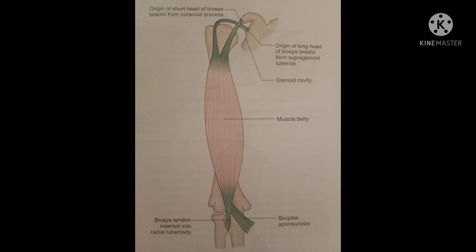Nerve supply of biceps brachii muscle: it is supplied by the musculocutaneous nerve, root value C5, C6, C7. Action of biceps brachii muscle: the most powerful action at the elbow — it is a powerful flexor and supinator of the forearm. It is also helpful for flexion of the shoulder joint.